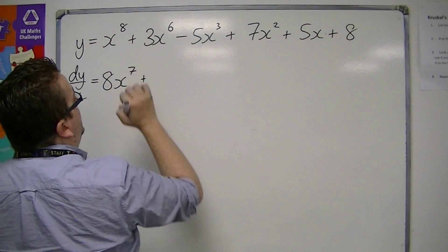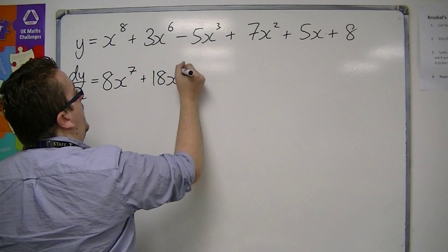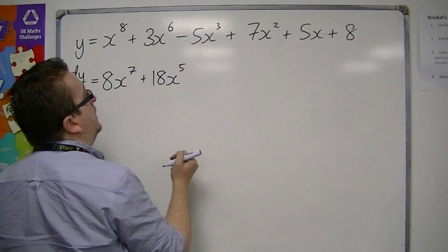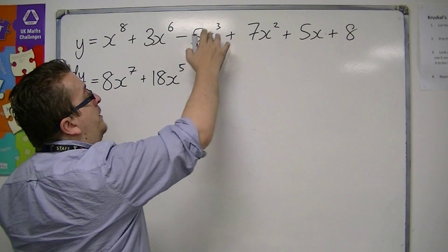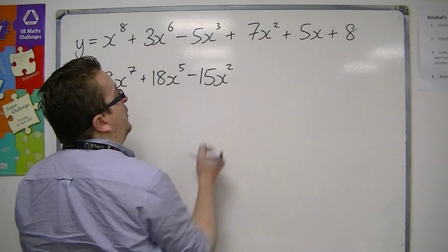For this second term, the 6 comes down to the front and multiplies with the 3 to make 18, and you take one off the power. For the third term, the 3 comes down to the front, multiplies with the 5 to make 15, and 1 comes off the power.